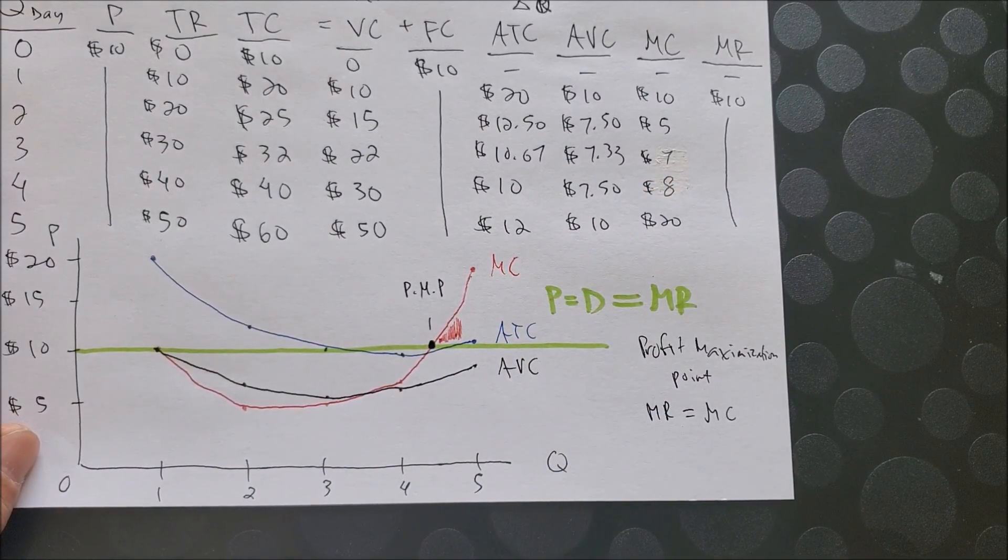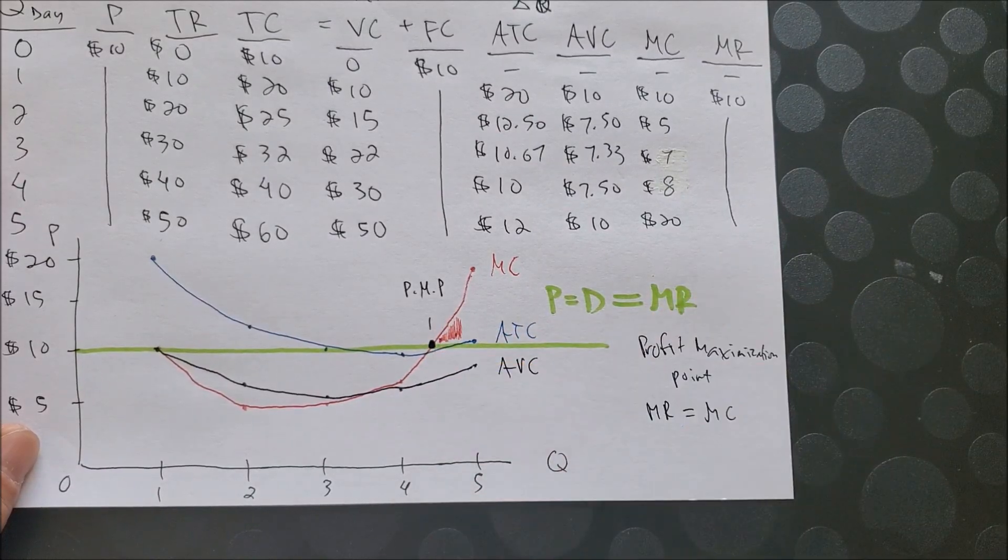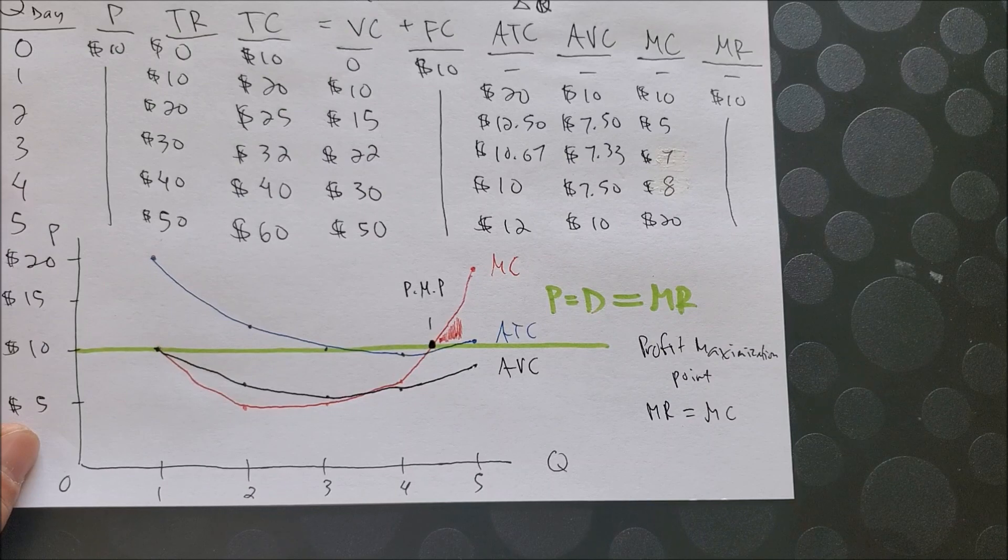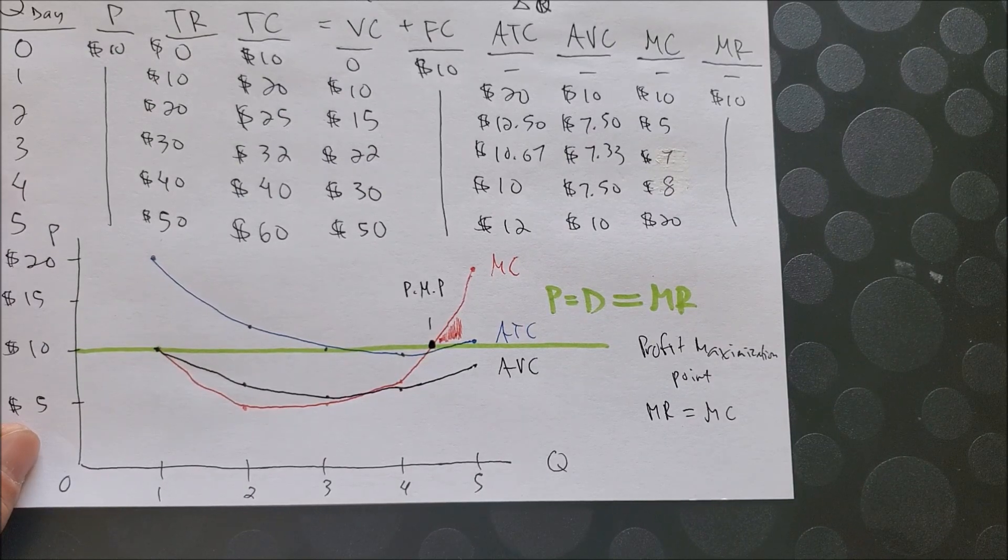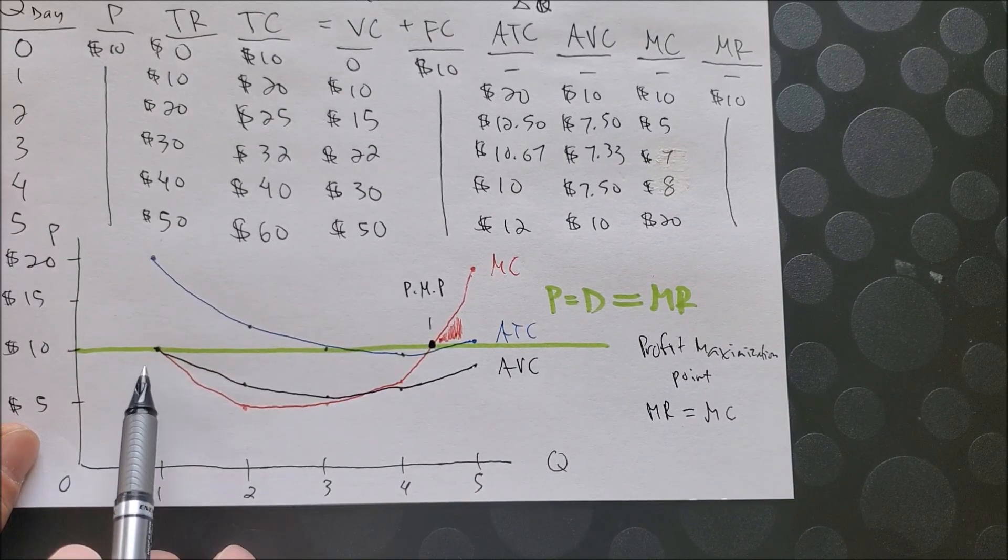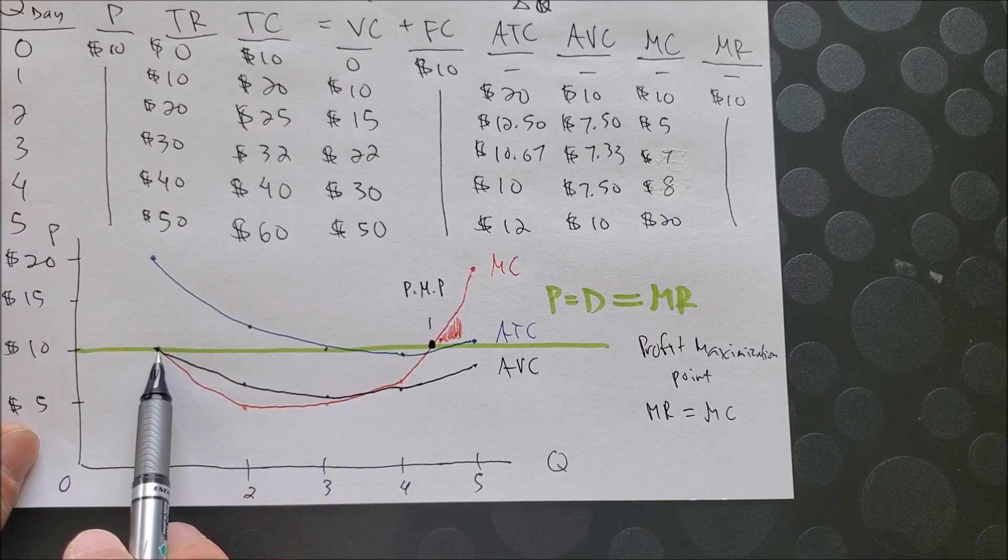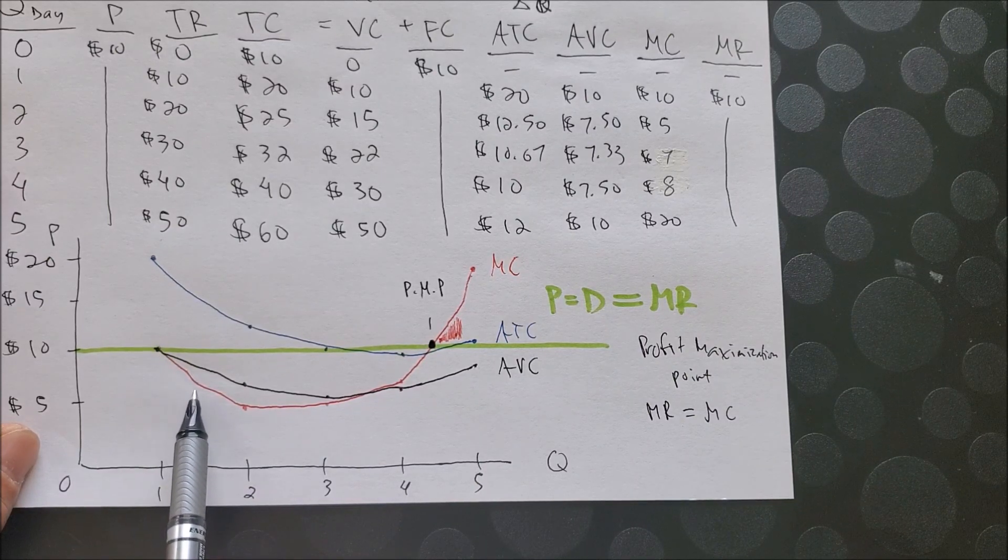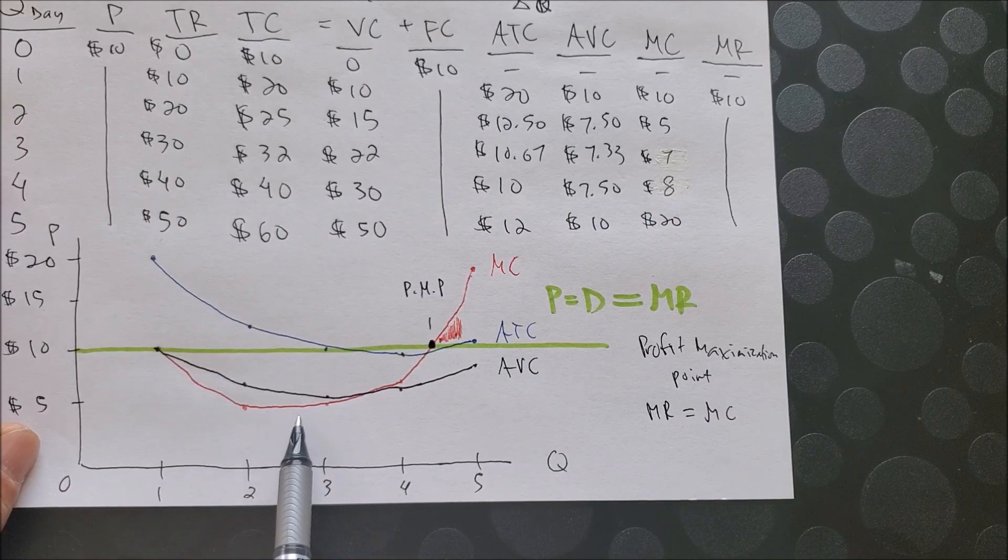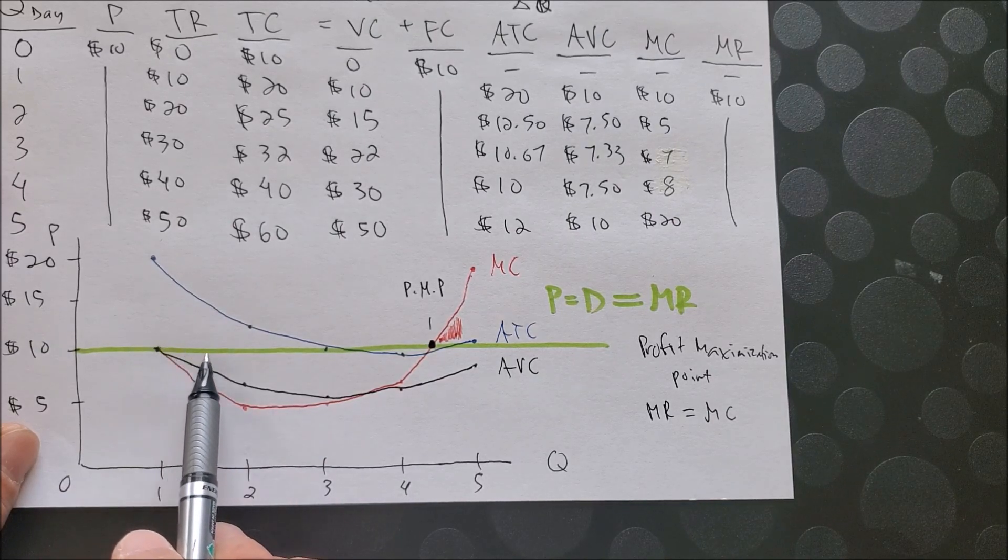So you do not want to wash more vehicles beyond this point. Now, we can also see that MC and MR intersect at the very beginning, at one vehicle. But look at marginal cost. Marginal cost is declining. Marginal revenue is constant.